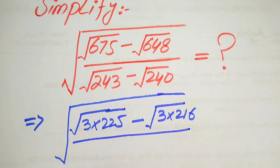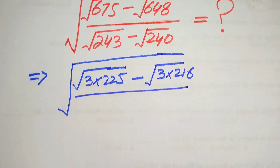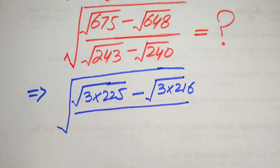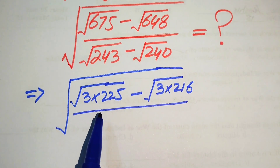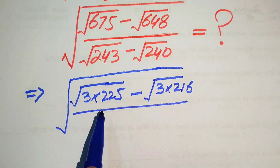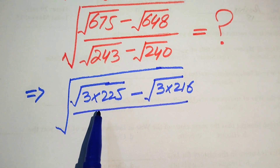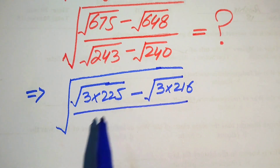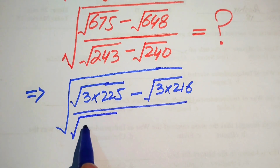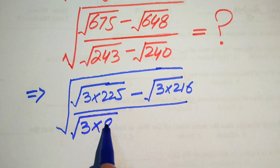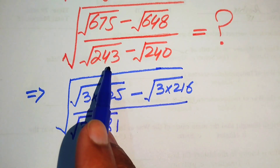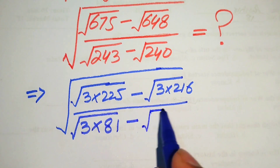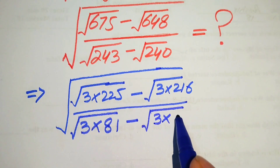Remember, we solve this problem without using a calculator, so you can easily find these products by the traditional method of multiplication. We write 243 as 3 multiplied by 81, and 240 as 3 multiplied by 80.